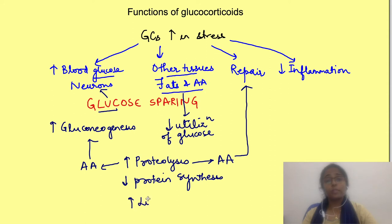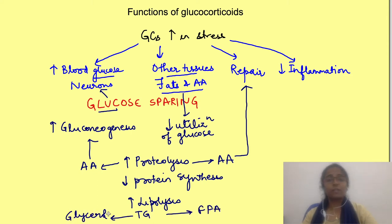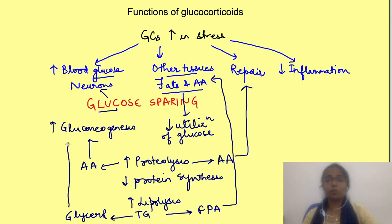Glucocorticoids also increase lipolysis in adipose tissue, causing breakdown of triglycerides and thus releasing free fatty acids and glycerol. Free fatty acids are used as fuel by tissues, while glycerol is used for gluconeogenesis.